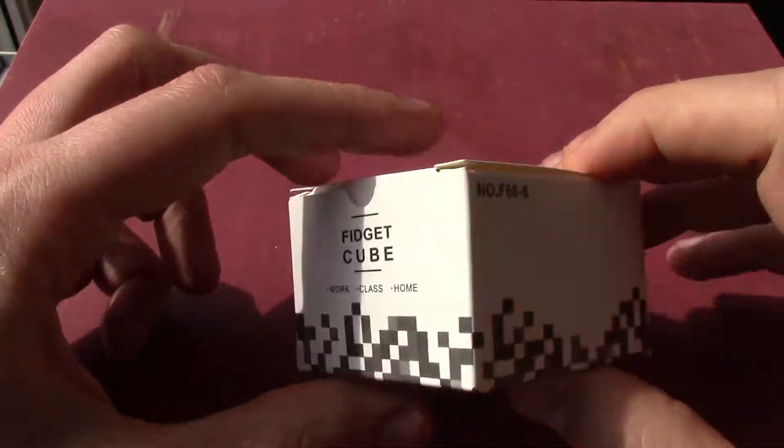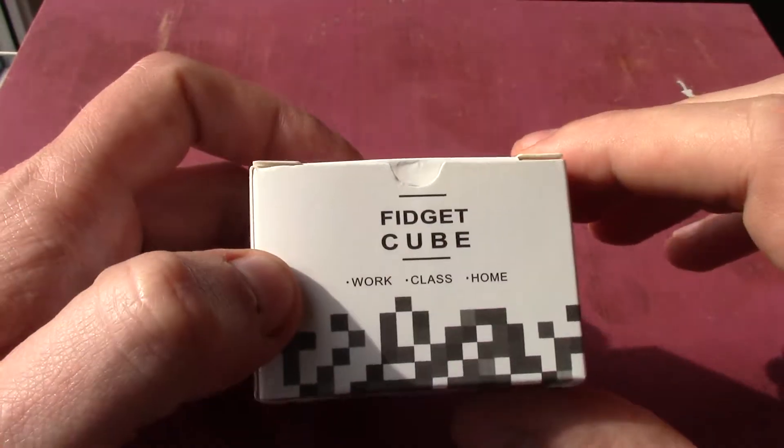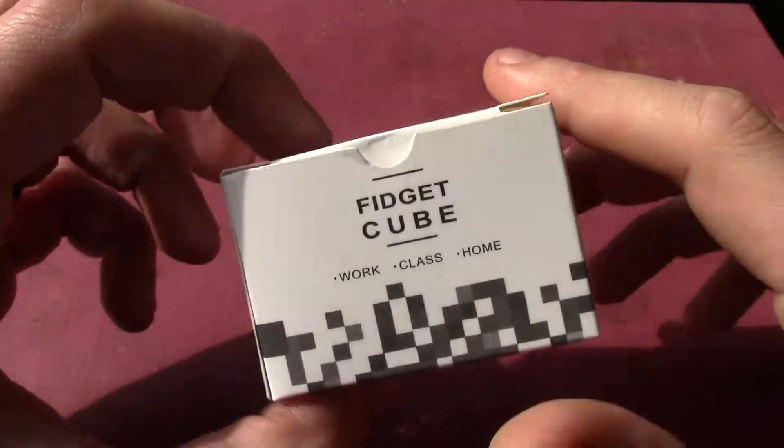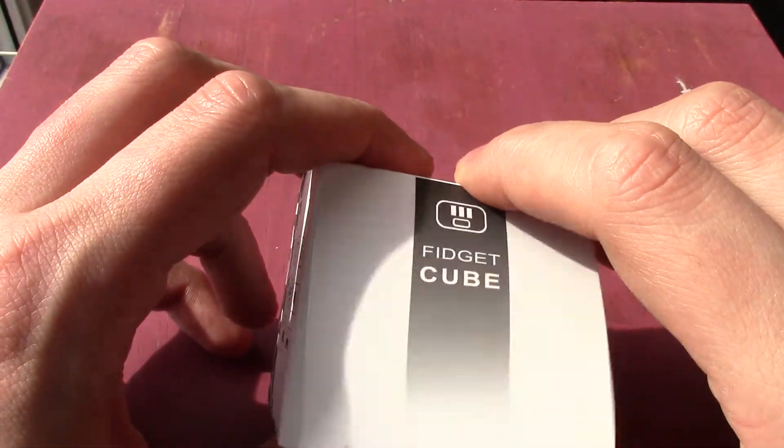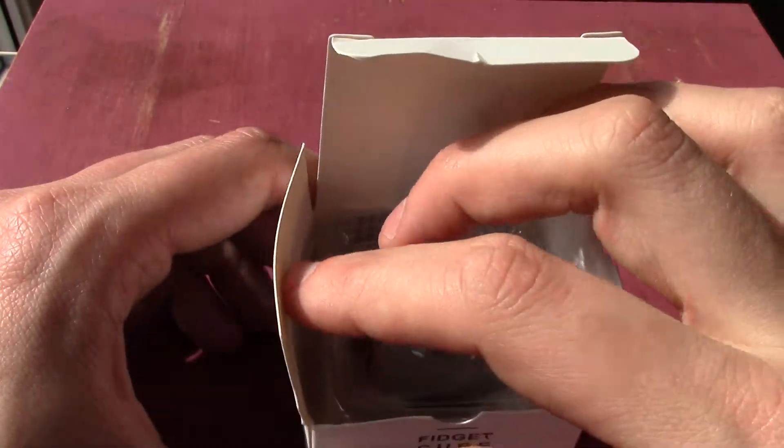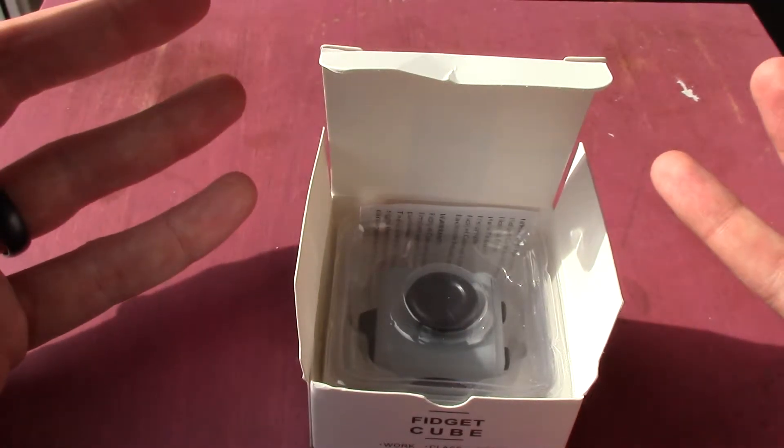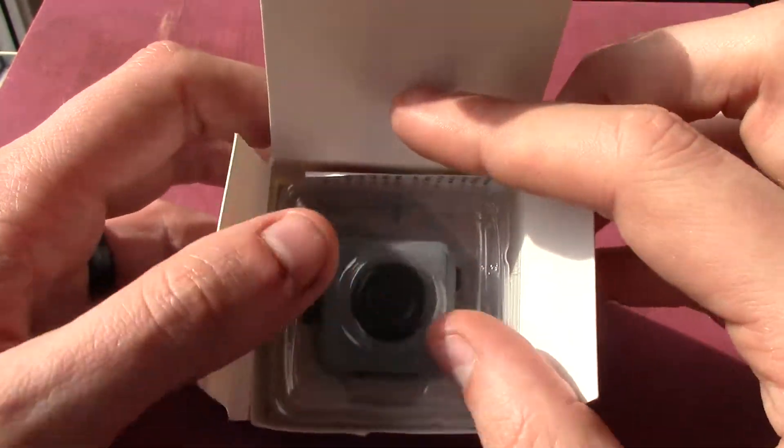Alright everyone, I thought I would do a bit of a different video today and look at this fidget cube which I bought last week. It's a bit of a random object, I'll open it up and show you. I saw this on Jim Sterling's channel and I've been looking out for one. I noticed a puzzle shop near me that sells Rubik's cubes and things had them in and I thought I might give this a go.